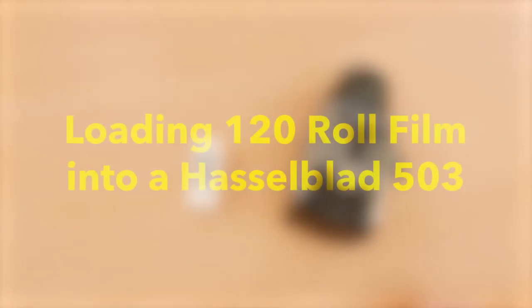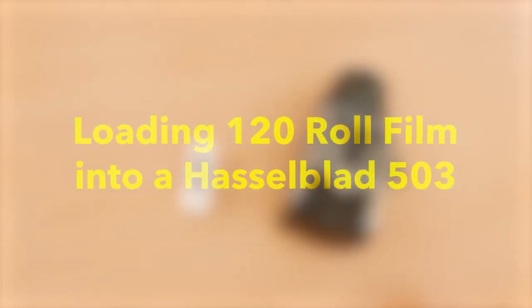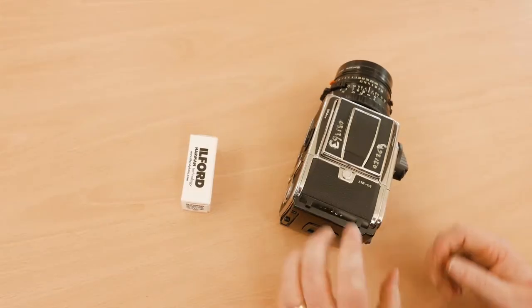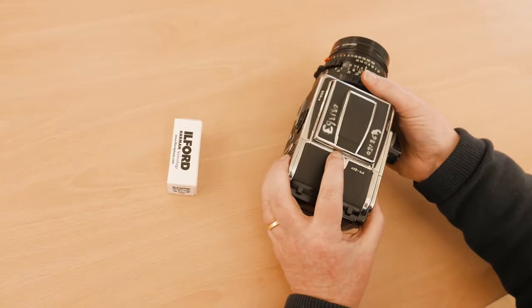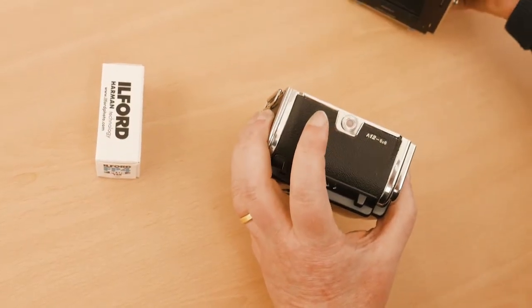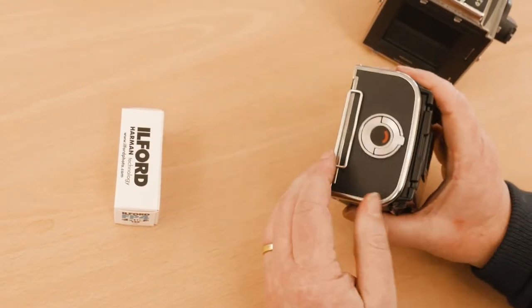I'm going to load a 120 roll film into a Hasselblad film camera. I'm going to take the back off the camera to do this. You don't have to, you can load it with the back on the camera still.